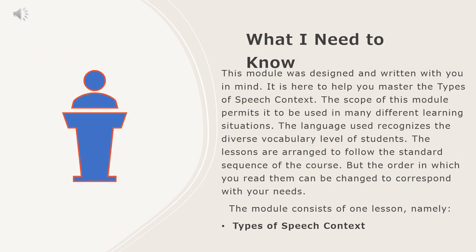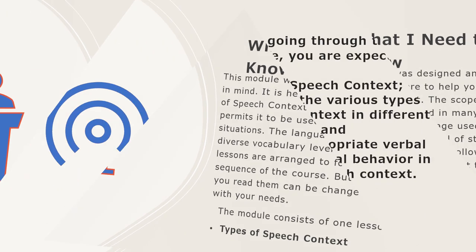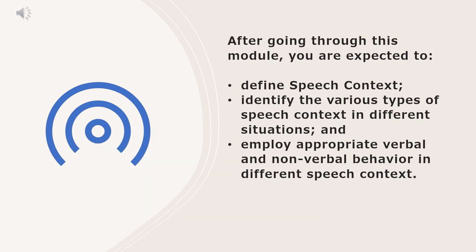This module was designed and written with you in mind. It is here to help you master the types of speech context. The scope of this module permits it to be used in many different learning situations. The language used recognizes the diverse vocabulary level of students. The lessons are arranged to follow the standard sequence of the course, but the order in which you read them can be changed to correspond with your needs. The module consists of one lesson, namely, types of speech context. After going through this module, you are expected to define speech context, identify the various types of speech context in different situations, and employ appropriate verbal and non-verbal behavior in different speech contexts.